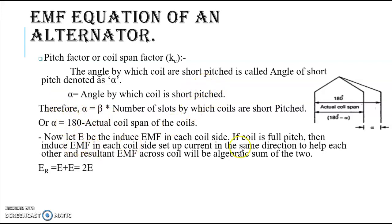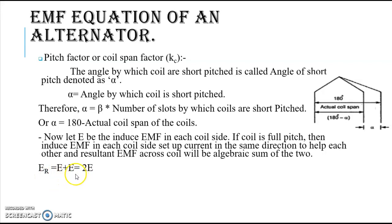Now consider the case where our coil is full pitched. If the coil is full pitched, then the induced EMF in each coil side will set up current in the same direction. Because of that, the resultant EMF will be the algebraic sum of the two EMFs produced in conductor 1 and conductor 2. So in case of full pitch winding, the resultant EMF ER equals E plus E, that is 2E.